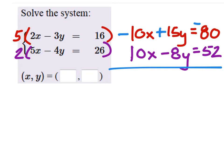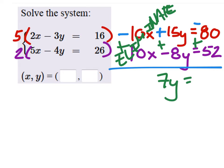So that's why they call it the addition method, but whatever. We're going to add these together, each column. Negative 10X plus 10X, well, that eliminated. 15Y minus 8Y would be 7Y equals negative 80 plus 52, 28.